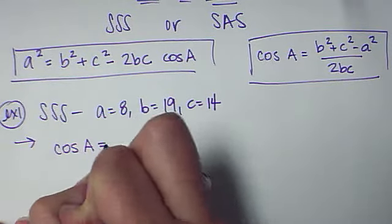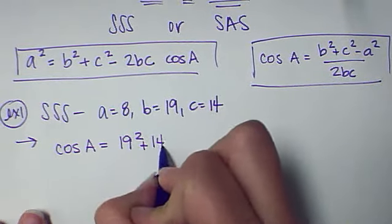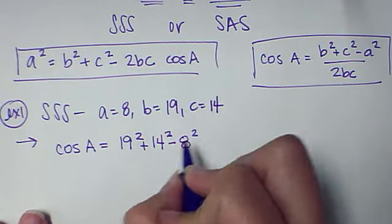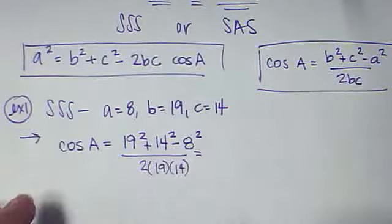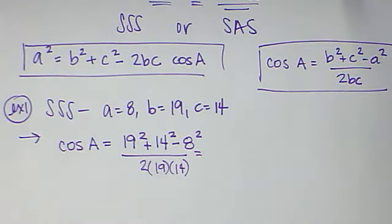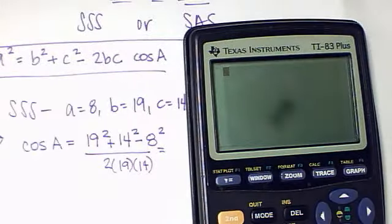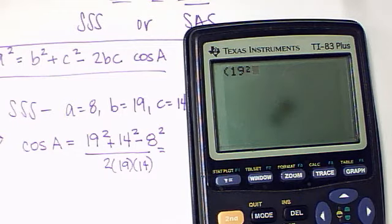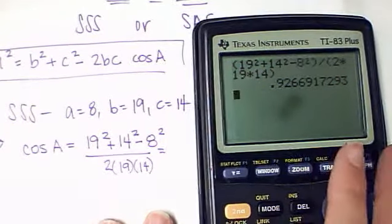To get the cosine of angle A, we're going to plug it in. B, which is 19 squared, plus C, which is 14 squared, minus A, which is 8 squared, all over 2 times 19 times 14. If I plug that into my calculator, let me turn on my calculator real quick. If I plug that all into my calculator, I need to be sure I put the top in parentheses and the bottom in parentheses.